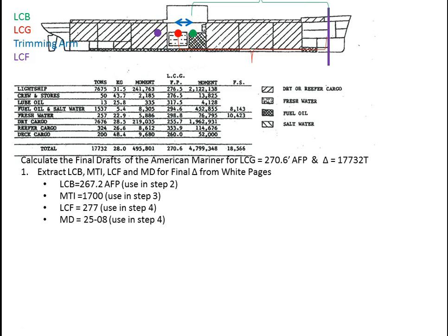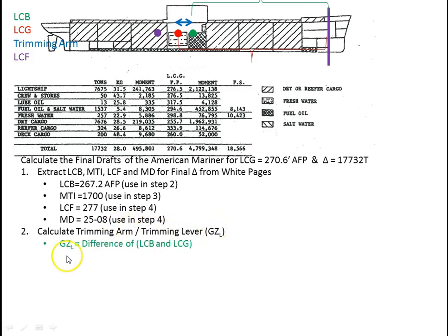Step 2: calculate the trimming arm, also called the trimming lever or GZL. The trimming arm is the difference between LCB and LCG. So that is 270.6 minus 267.2, which equals 3.4 feet.